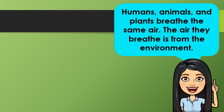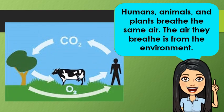Humans, animals, and plants breathe the same air. The air they breathe is from the environment. We all know that we need oxygen for us to survive. On the other hand, plants need carbon dioxide in making their food.